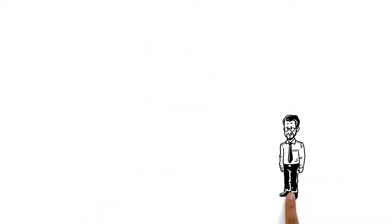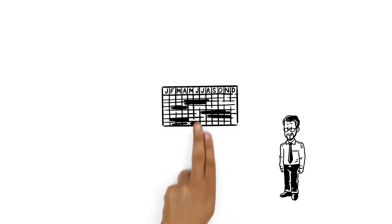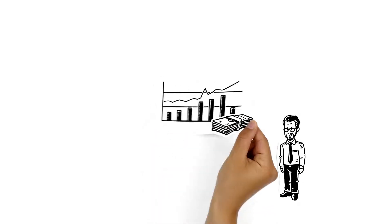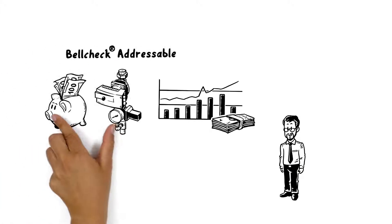Martin's even more delighted when he learns that the typical payback period for ZoneCheck Addressable is between 9 and 18 months. With the inclusion of BellCheck, weekly testing can also be included, giving Martin significantly increased savings.